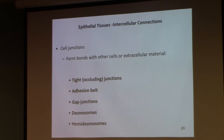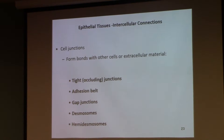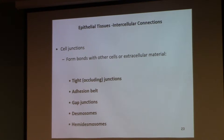My suggestion would be, if I were a student, I would simply memorize the names on this page. Don't worry about knowing what they are yet — just bomb it in, bomb it out. Memorize the page first. I've got tight junctions, gap junctions, something called an adhesion belt, something called a desmosome, and a hemidesmosome.